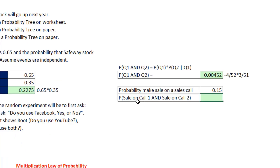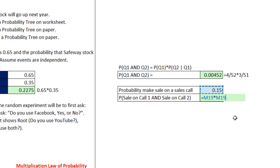Here's the probability that you can make a sale on any particular sales call — that's 15%. We want to know the probability that we can make a sale on call one and on call two back to back. Two calls like this are assumed to be independent, so we simply take the probability for making a sale on any particular call for the first call, times the same probability for the second call. So 15 times 15 is 225, giving us 2.25%.